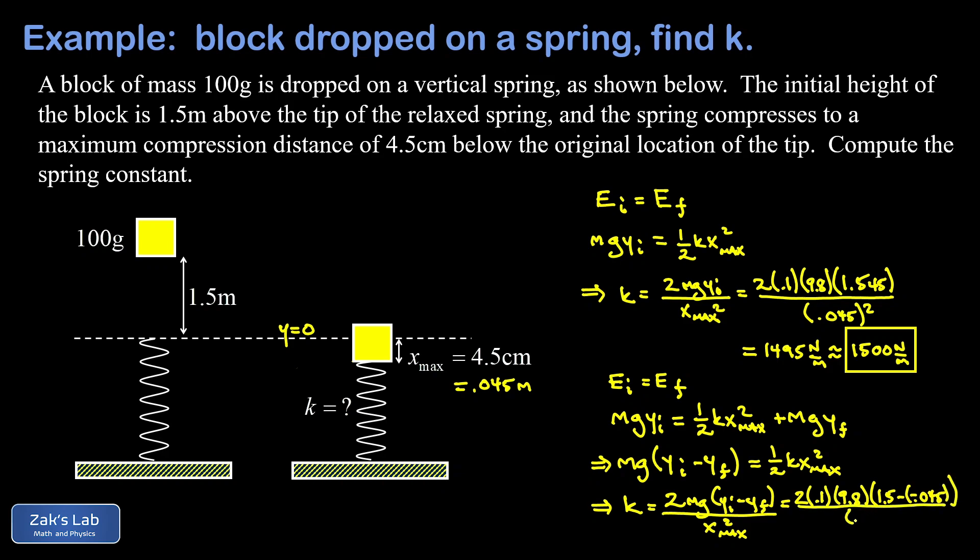That's all divided by x max squared, 0.045 all squared. And that 1.5 minus negative 0.045, well, the double negatives cancel and I end up with exactly the same thing I did before. So of course, when I smash the numbers into a calculator, I get the same 1500 newtons per meter.